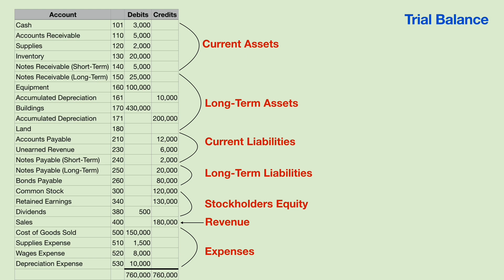Let's take a closer look at this trial balance. Notice how we have assets divided into current assets and long-term assets, and look at the liabilities — we have current liabilities and long-term liabilities. A current asset is cash or something that will be converted to cash within a year or will be used up within a year.